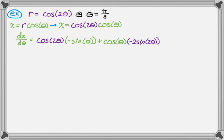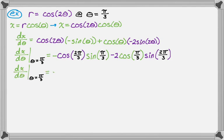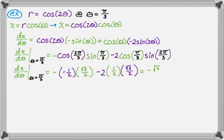Now we evaluate at pi over three. I'll show a step where I plug in pi over three across the board. You have to think about the unit circle and the values you have memorized — it's really important that you know those values. After substituting and simplifying, we ultimately get negative radical three over four. So that's dx/dθ.